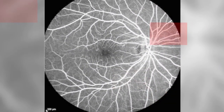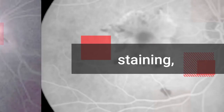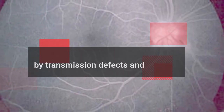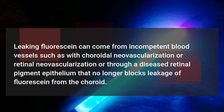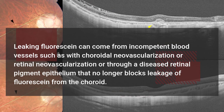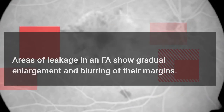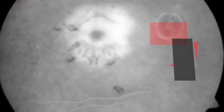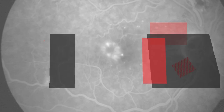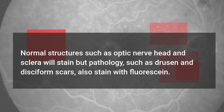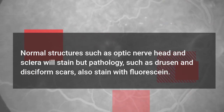Hyperfluorescence can occur because of fluorescent leakage, transmission defects, and autofluorescence. Leaking fluorescence can come from incompetent blood vessels such as with choroidal neovascularization or retinal neovascularization, or through a diseased retinal pigment epithelium that no longer blocks leakage of fluorescence from the choroid. Areas of leakage in an FA show gradual enlargement and blurring of their margins, in contrast to structures that stain. Staining results in increasing fluorescence throughout the angiogram but the margins remain distinct. Normal structures such as the optic nerve head and sclera will stain, but pathology such as drusen and disciform scars also stain with fluorescence.